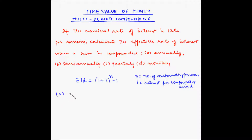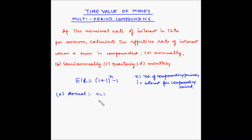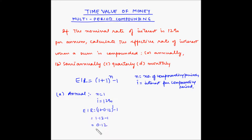In the case of annual compounding, since the tenure is considered as one year only, the total number of compounding periods n is equal to 1, and the interest rate per compounding period is the same as the annual interest rate, which is 12%. So the effective interest rate equals (1 + 0.12)^1 − 1 = 1.12 − 1 = 0.12, which is 12%. The effective interest rate is the same as the nominal interest rate.